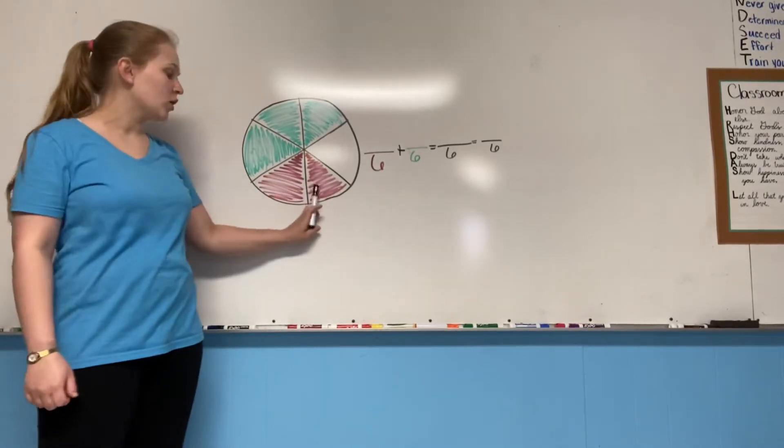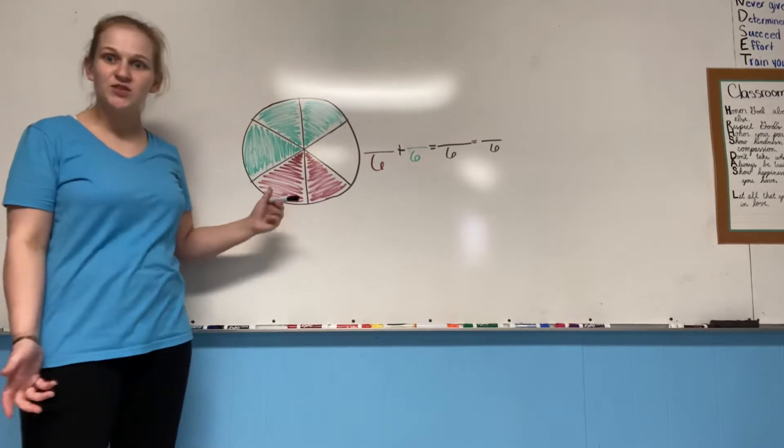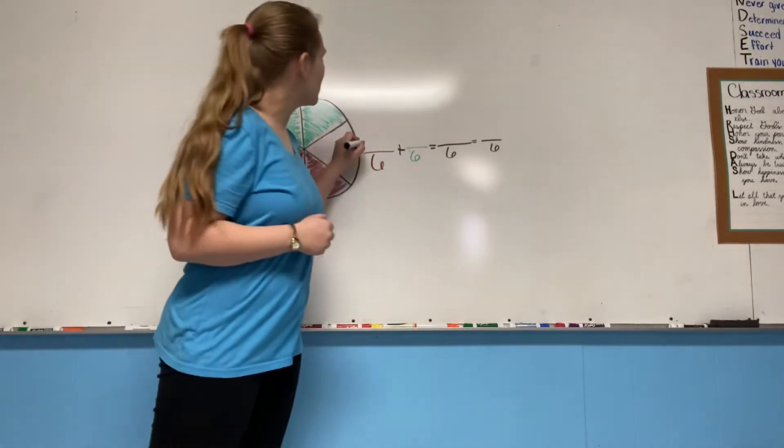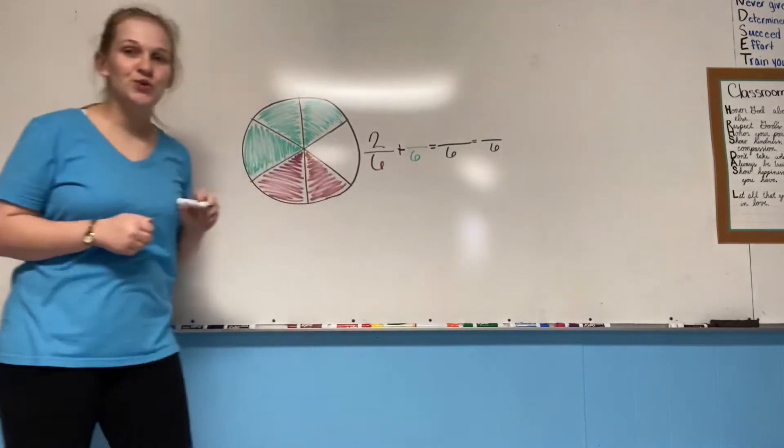So what would the numerator be in this fraction? Two. Two fractional parts. So our first fraction is two sixths.